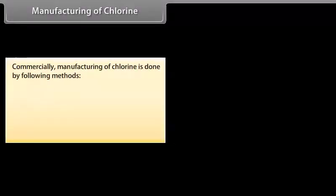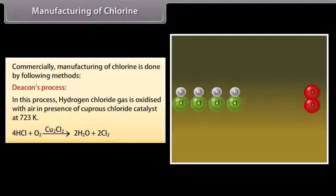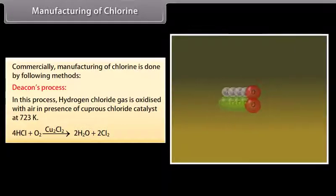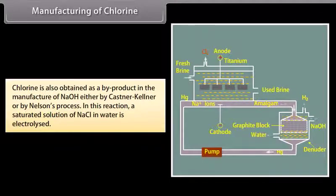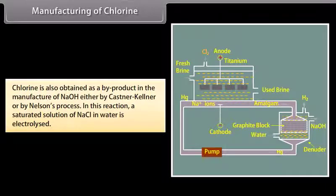Manufacturing of chlorine: Commercially, chlorine is manufactured by the following methods. In the Deacon's process, hydrogen chloride gas is oxidized with air in the presence of cuprous chloride catalyst at 723 K. It is also manufactured by electrolysis of fused NaCl using lead as cathode and carbon as anode. Chlorine is also obtained as a by-product in the manufacture of NaOH by either the Castner–Kellner or Nelson's process, where a saturated solution of NaCl in water is electrolyzed.